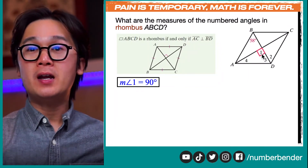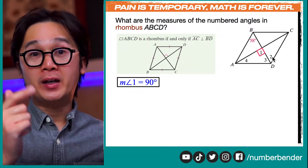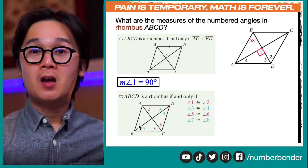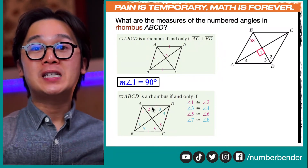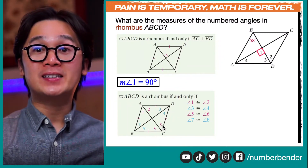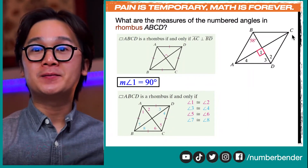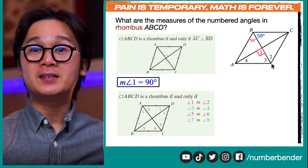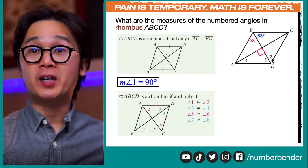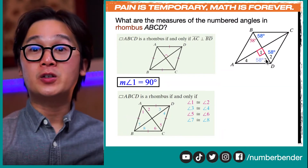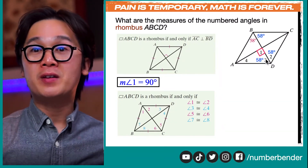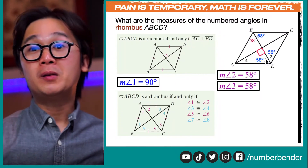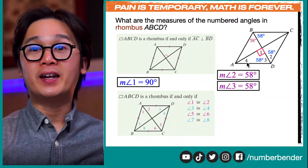Now that we have the angle measurement of angle 1, we can find the angle measurements of 2 and 3 using the second theorem about rhombus — that our diagonals are angle bisectors, which means angles 1 and 2 are congruent and share the same measurement as angles 5 and 6. We know angle 1 is 90 degrees because of the perpendicular diagonals theorem. We know angle 3 will be 58 degrees, and by the corresponding angles in parallel lines cut by a transversal, angles 2 and those corresponding angles are also 58 degrees. So we've solved for angle 2 and angle 3, both 58 degrees.